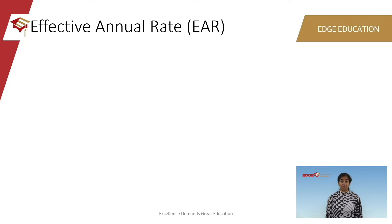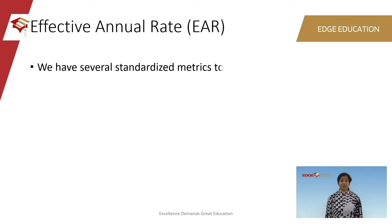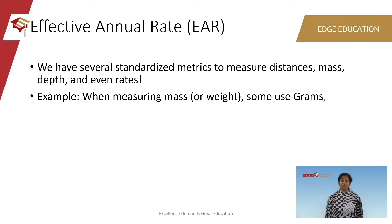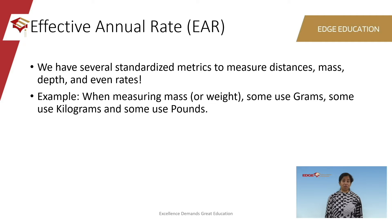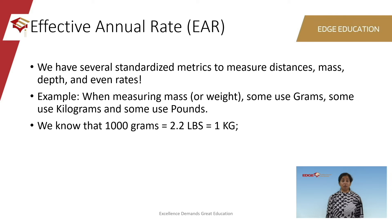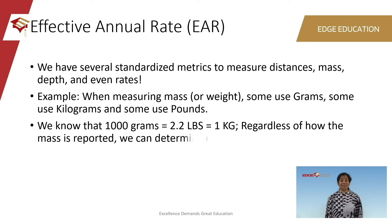Effective annual rates. In order to understand this concept, we will begin this discussion with measurement scales that we have been using since childhood. We have several standardized metrics to measure distances, mass, depth, and even rates. For example, when measuring mass, some people use grams, some use kilograms, and some use pounds. The idea is to measure the same mass or the same weight. We know that 1,000 grams is equivalent to 2.2 pounds, which is equivalent to 1 kilogram. Regardless of how the mass was reported, the idea is to be able to capture equivalencies or equivalent forms of weight.